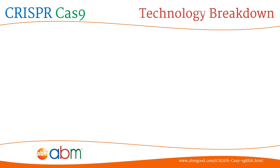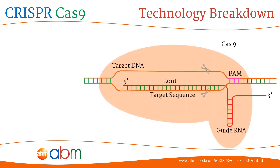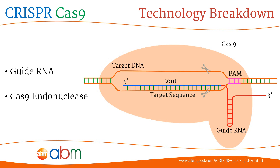Originally the adaptive immune defense mechanism used in bacteria for degradation of foreign genetic material, CRISPR has two components: a guide RNA and the Cas9 endonuclease. When gRNA and Cas9 are expressed in a living cell, the gRNA-Cas9 complex is recruited to the target sequence, which is directly upstream of the PAM sequence, through complementary base pairing of the gRNA to the genomic DNA.